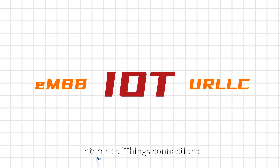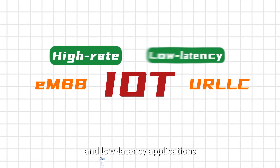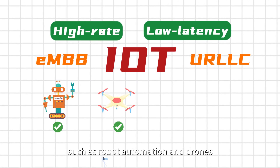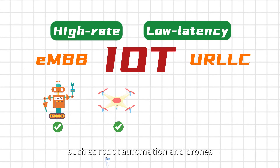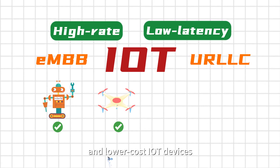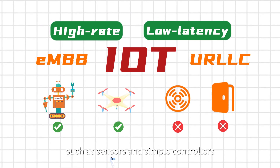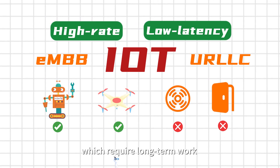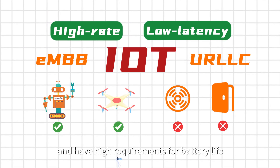Both EMBB and URLLC support Internet of Things connections, but they only include high-rate and low-latency applications, such as robot automation in drones. They are not suitable for simpler and lower-cost IoT devices, such as sensors and simple controllers, which require long-term work and have high requirements for battery life.